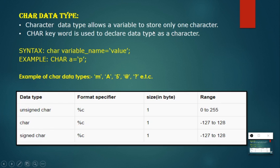Character is generally divided into three types: unsigned char, char, and signed char. All three have a common format specifier '%c', which you use when scanning with scanf or printing with printf.